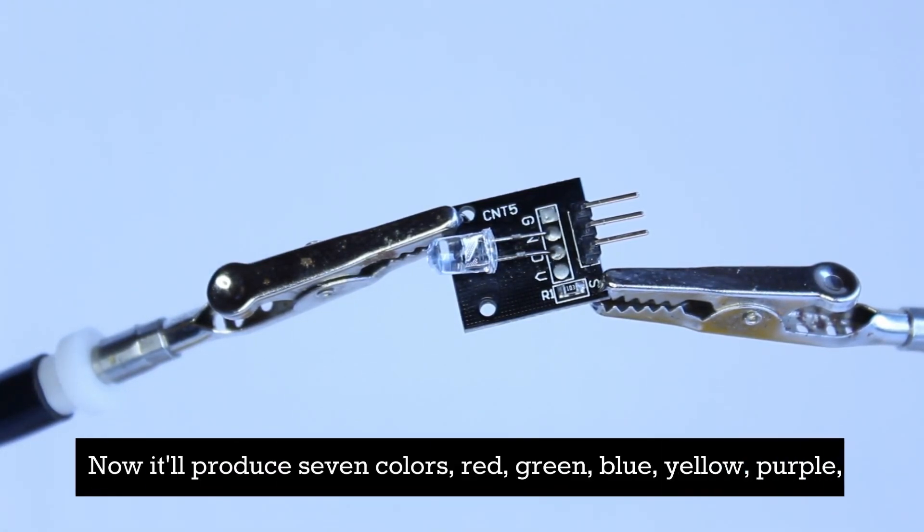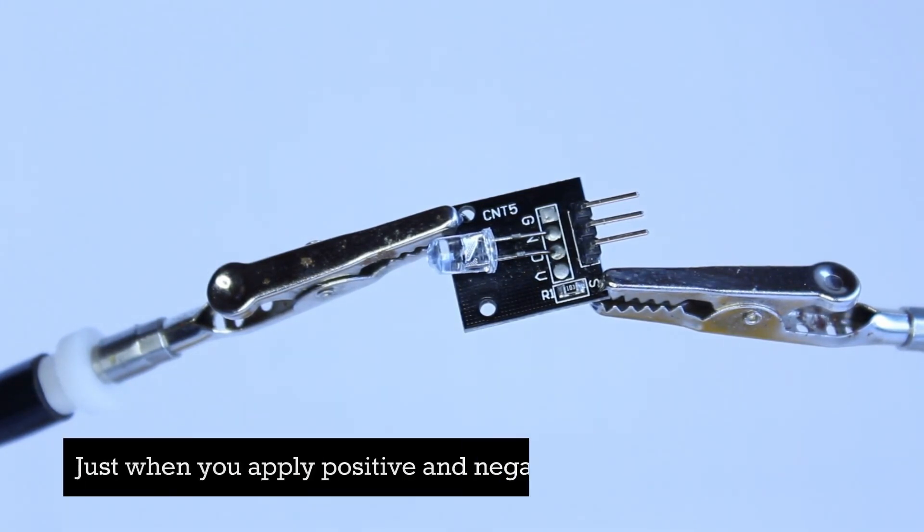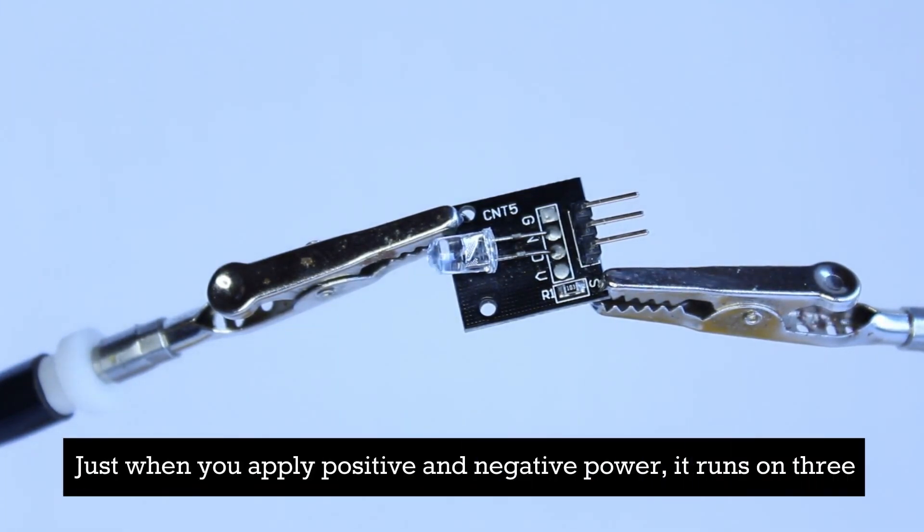Now it'll produce seven colors: red, green, blue, yellow, purple, cayenne, and white in a randomized sequence just when you apply positive and negative power.